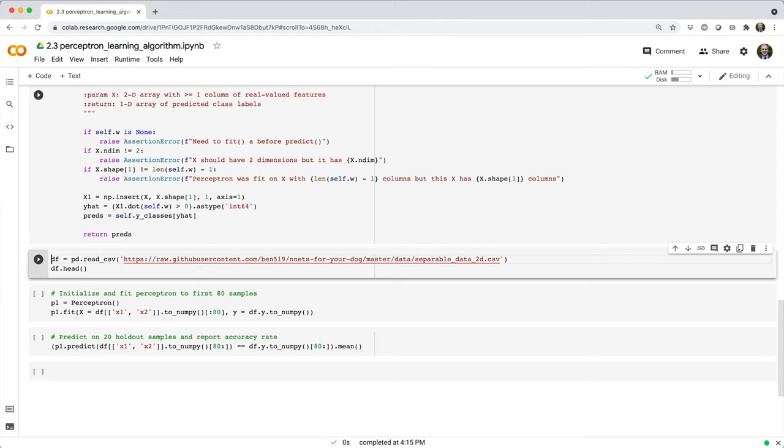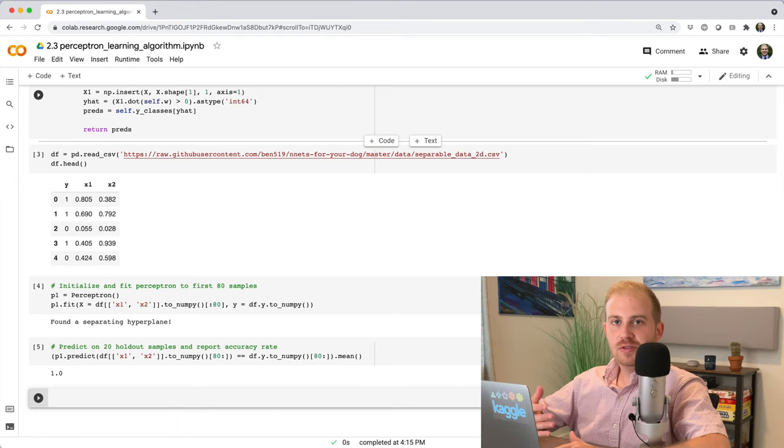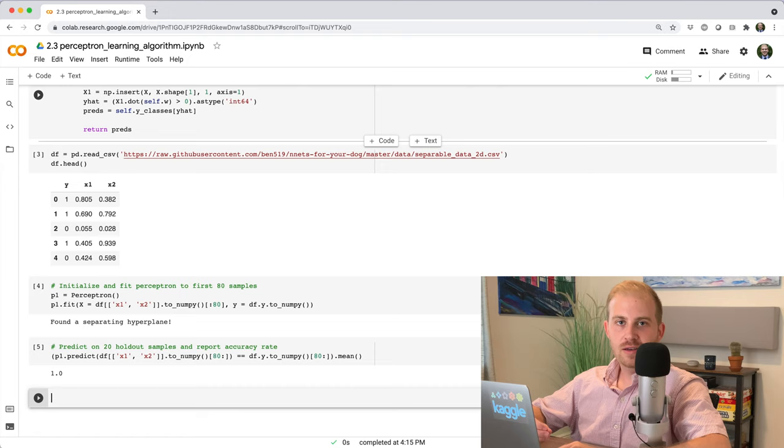Let's test it out on our known separable 2D dataset, just like we did in the last section. Empirically, this thing seems to work. But it almost feels like we're just using a heuristic, and maybe there's a scenario where this algorithm fails to converge on a hyperplane that we know exists.